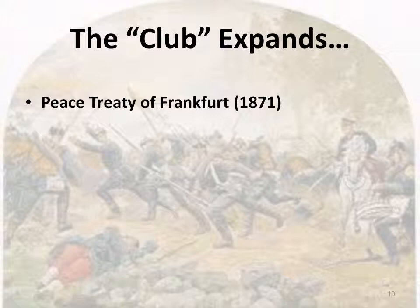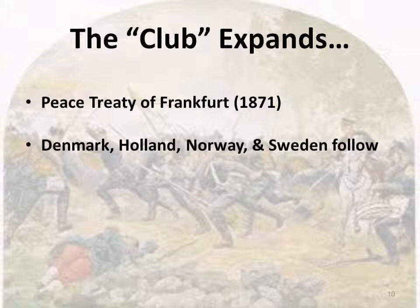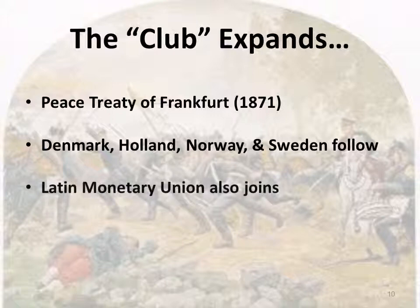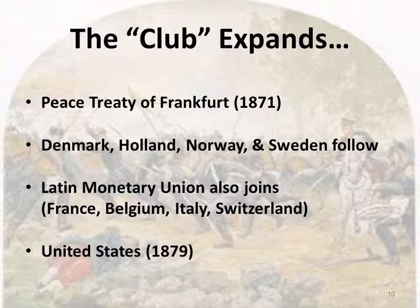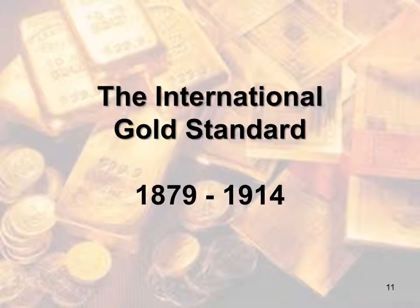Relatively quickly, foreign nations that were important trading partners for Germany — Denmark, Holland, Norway, and Sweden — also adopted a gold-only standard. Then the so-called Latin Monetary Union — France, Belgium, Italy, and Switzerland — converted as well, and the last big player to join was the United States in 1879. In less than a decade, what was only the UK and Portugal became roughly a dozen major economic powers plus the U.S. When we talk about the international gold standard, 1879 is more or less the starting point — the idea that gold is what's backing currency. The international gold standard came into crisis in 1914 with the beginning of World War I, and it never really quite recovered.